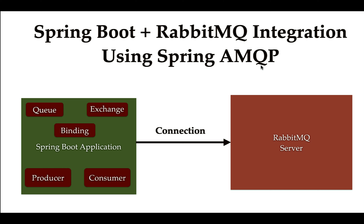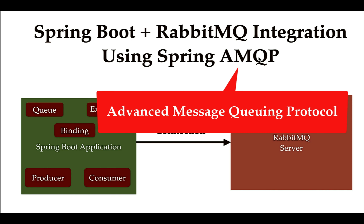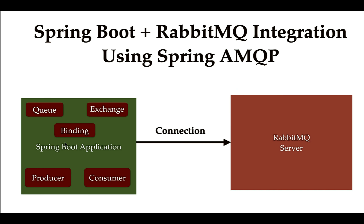AMQP stands for Advanced Message Queuing Protocol, and RabbitMQ uses this protocol for messaging. Once you learn how to connect your Spring Boot application with the RabbitMQ server, you'll learn how to configure all RabbitMQ components — queue, exchange, binding, producer, and consumer — in a Spring Boot application.